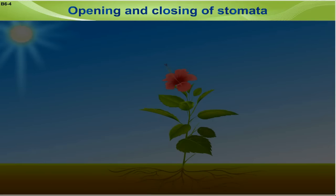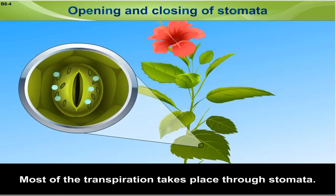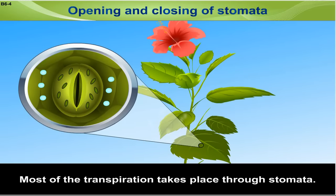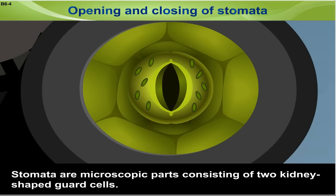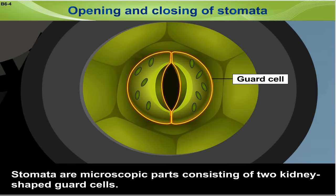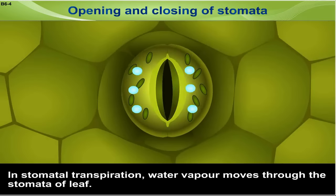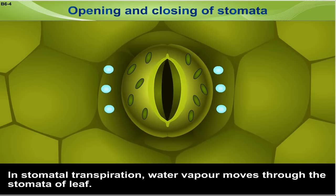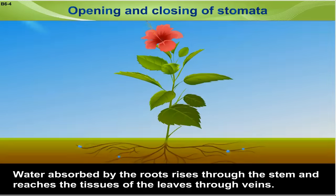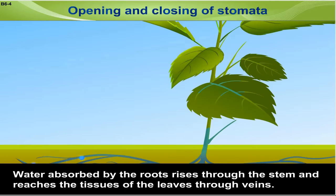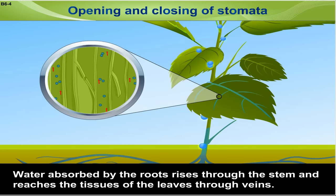Process of stomatal transpiration: most of the transpiration takes place through stomata. Stomata are microscopic parts consisting of two kidney-shaped guard cells. In stomatal transpiration, water vapour moves through the stomata of the leaf. Water absorbed by the roots rises through the stem and reaches the tissues of the leaves through veins.